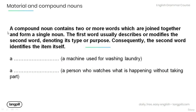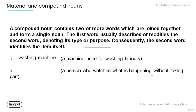Also remember that a compound noun contains two or more words which are joined together and form a single noun. The first word usually describes or modifies the second word, denoting its type or purpose. Consequently, the second word identifies the item itself. Now read the descriptions in the brackets and provide the appropriate compound noun. A machine used for washing laundry — washing machine. A person who watches what is happening without taking part — a bystander.